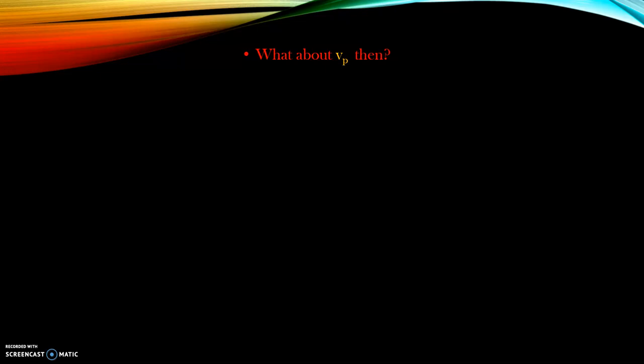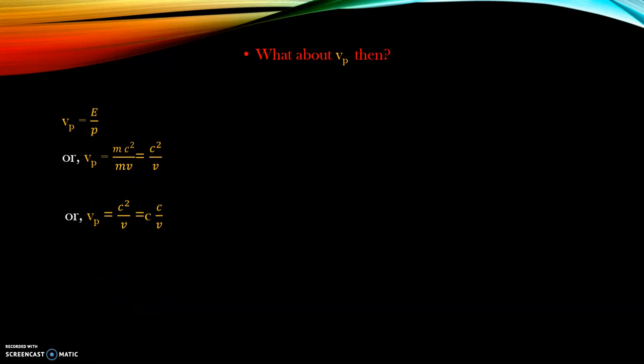But then what about phase velocity? Let us go back to the expression vp is equal to E by p which we have already derived. Considering Einstein's energy-mass equivalence expression, vp is coming out to be mc squared by mv, where mc squared has been put in place of energy and p has been replaced by m into v. So from this expression we can see that phase velocity is c squared by v, which can be written as a product of c and c by v. Since the velocity of the particle is always less than the velocity of light, this ratio c by v is always greater than 1, and hence phase velocity is seen to be greater than the velocity of light.